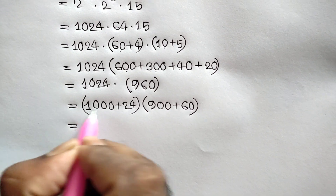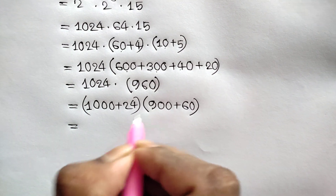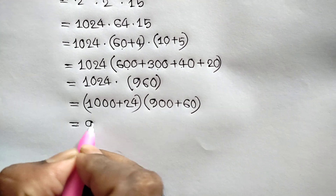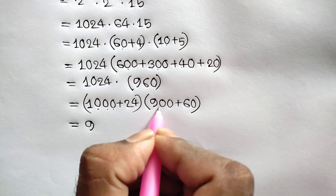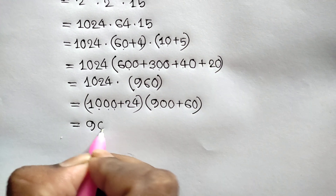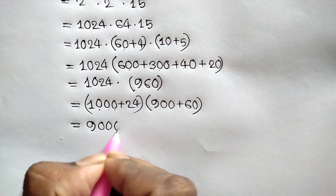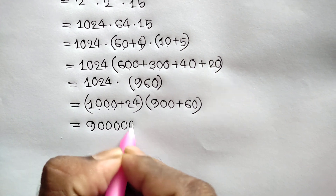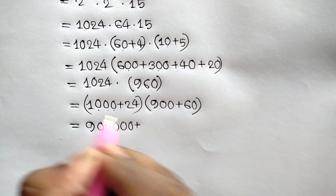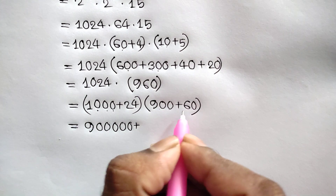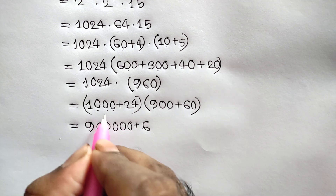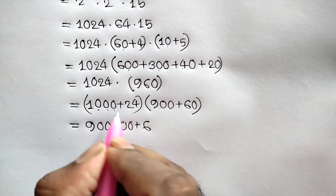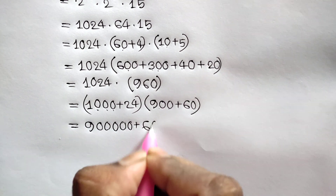Now 1 times 9 is 9 with 5 zeros, plus 1 times 6 is 6 with 4 zeros.